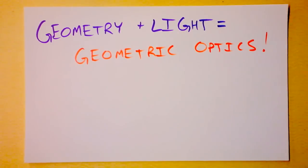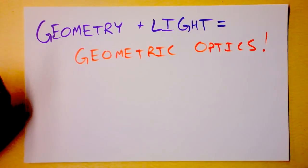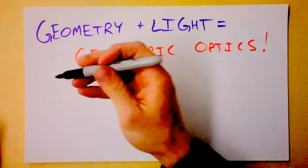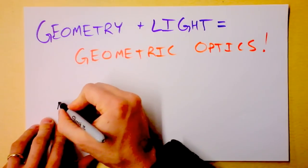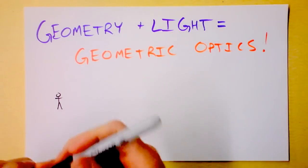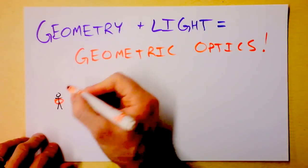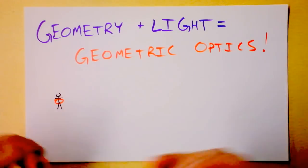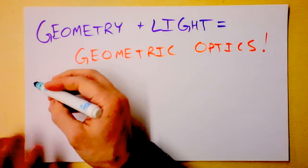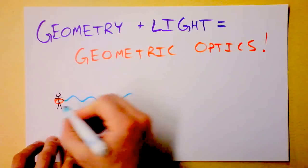We're going to talk about geometric optics today. So first, let me remind you that if you've got this kid bobbing up and down in the ocean — here's a kid, and he's got one of these floaty things around his belly — and he's bobbing up and down.